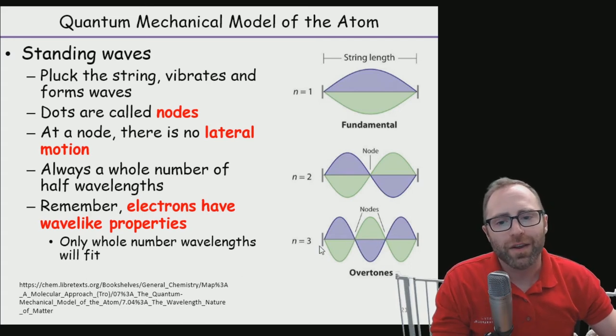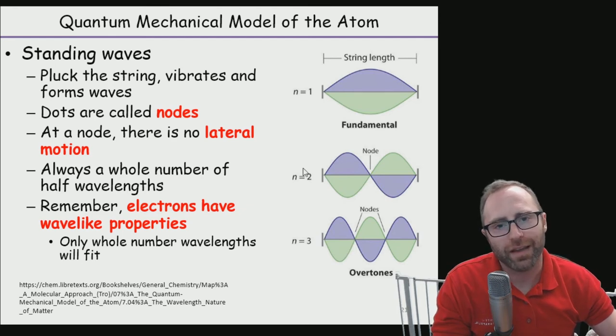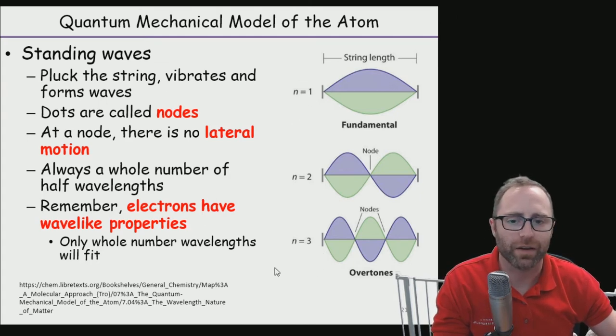So a wave here is always going to be a whole number of half wavelengths—we're always going to have a whole number here for the number of waves. So one, two, three. We can't have 3.5. It's not going to work.